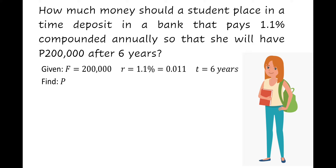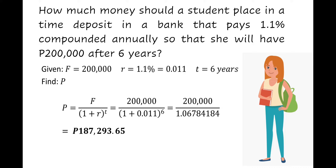We need to find the present value. Using the formula P = F ÷ (1 + r)^t: P = 200,000 ÷ (1 + 0.011)^6 = 200,000 ÷ 1.06784184 = 187,293 pesos and 65 centavos. So the student should deposit 187,293.65 pesos in the bank to have 200,000 after six years.